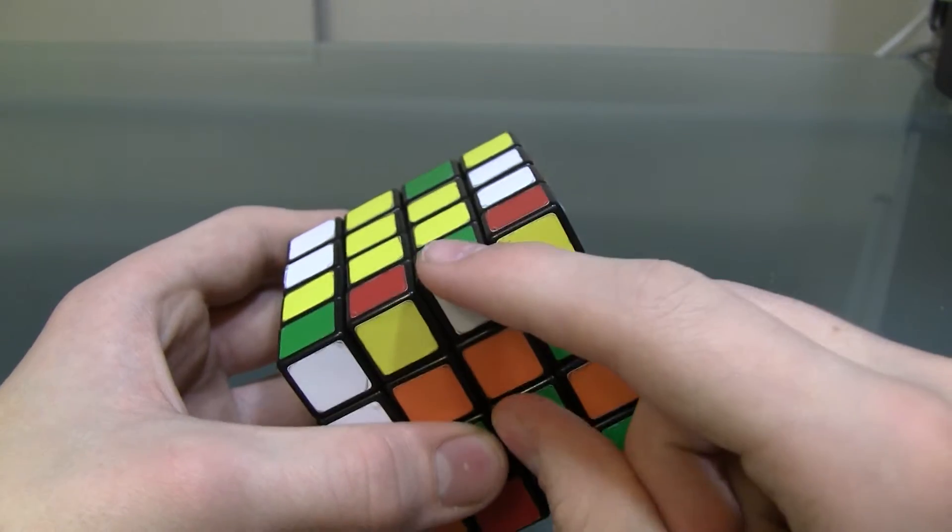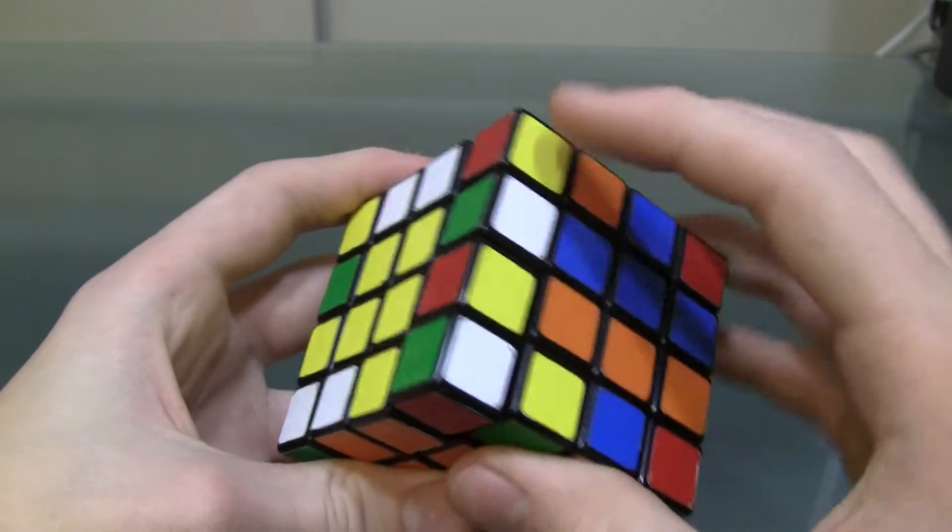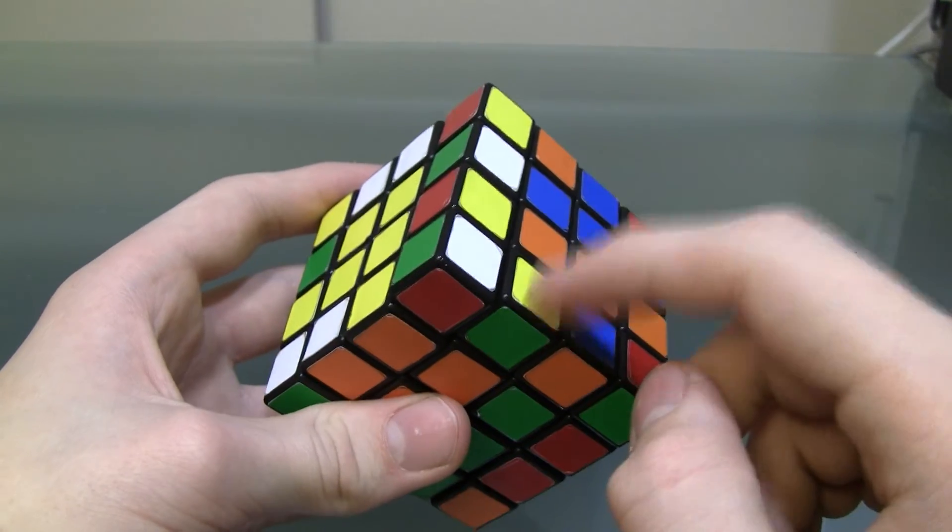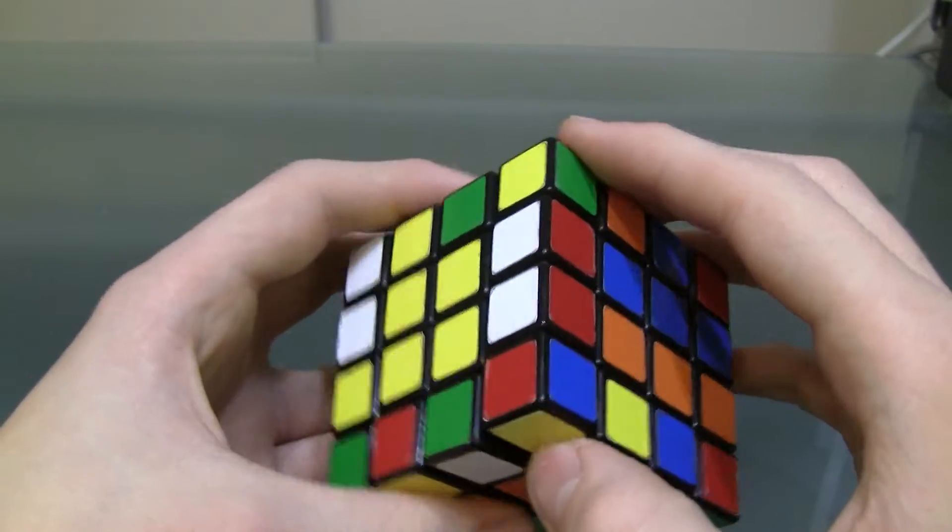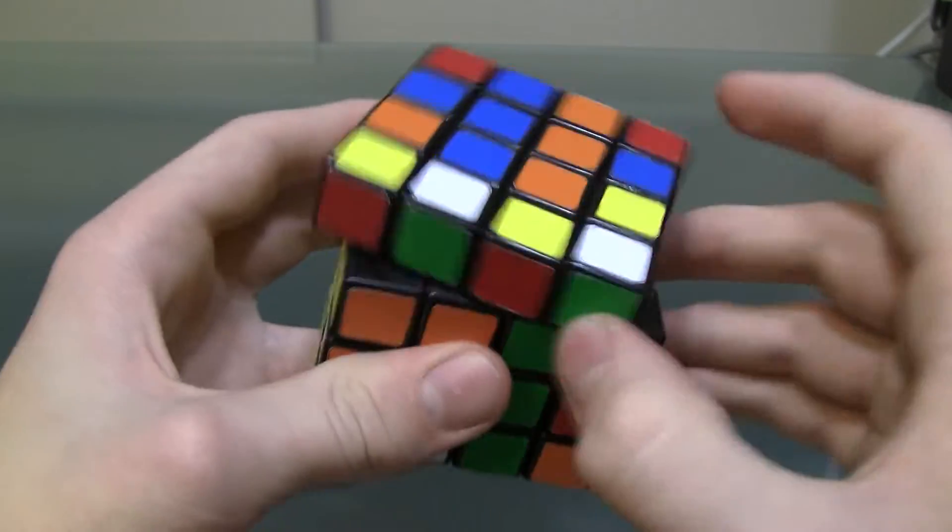And now, I have to replace them with an edge that isn't paired up. Like this one. Because, you'll notice, when I paired them up, I unsolved my centers. And I need to re-solve them. So, I have to bring an unmatched pair into place. Like this.